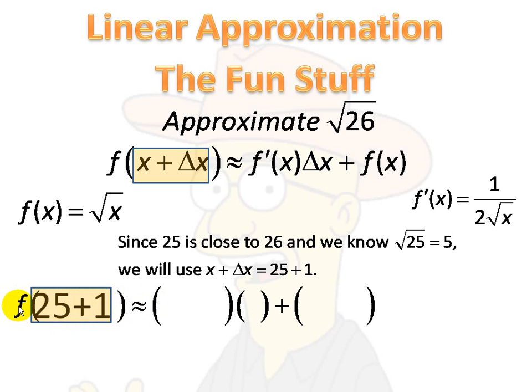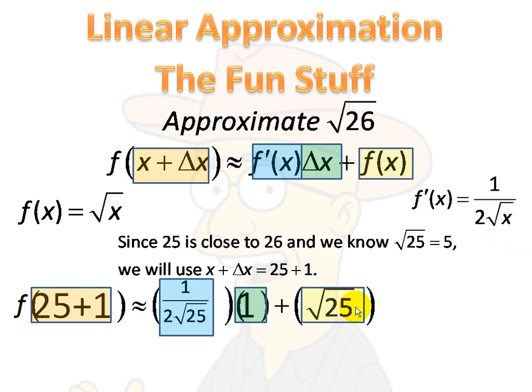So f of 26 is approximately, now, I need to put in the derivative, 1 over 2 times the square root of 25, and now delta x, which is 1, and then the square root of 25.